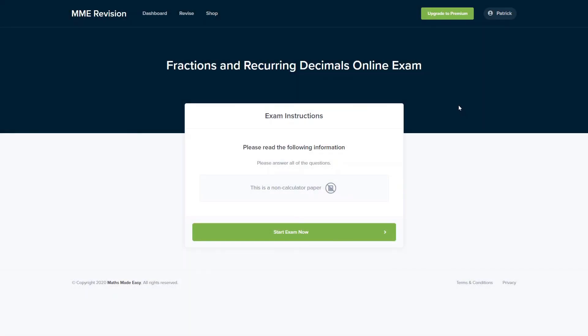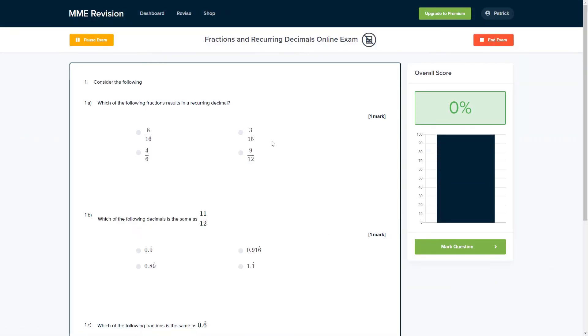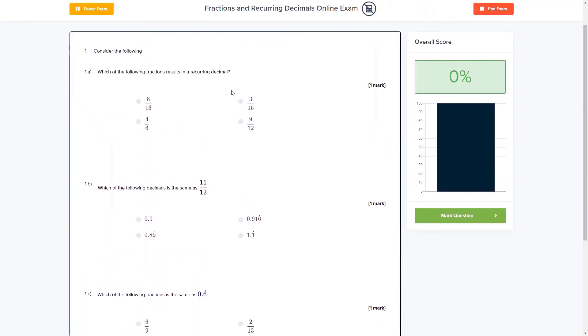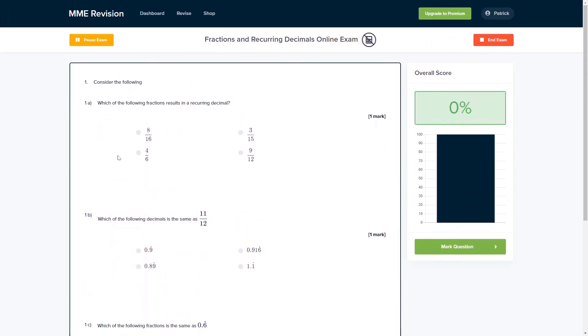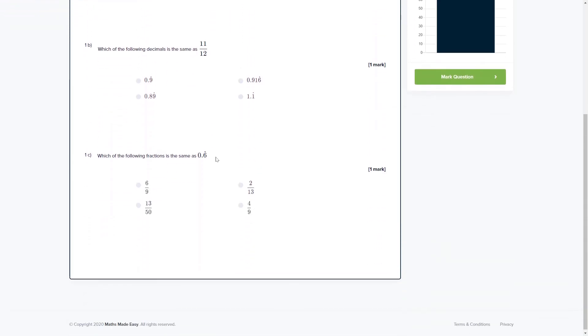If you'd like to get some practice with fractions and recurring decimals, you can do so with our online exam. This is available through our revision platform. If you take the test, you'll find loads of different questions to have a go at, and you'll get instant feedback on all of them. It's a really good way of keeping track of your progress, finding out where you're going wrong and how you can improve. If this is something you're interested in, you can click the link below.